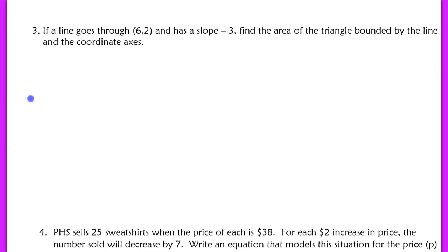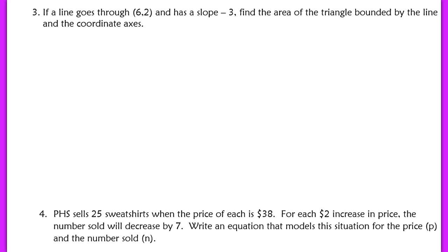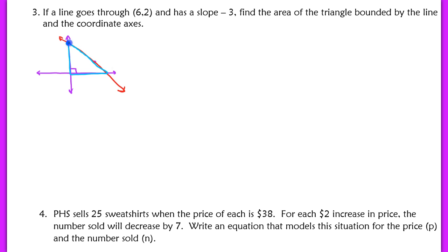Example 3 says: if a line goes through (6, 2) and has a slope of negative 3, find the area of the triangle bounded by the line and the coordinate axes. Drawing a sketch, we have a line through (6, 2) with a negative slope, and we need to find the area of the triangle bounded by that line and the axes. To find the area, we need the base and the height — essentially both intercepts of the line.